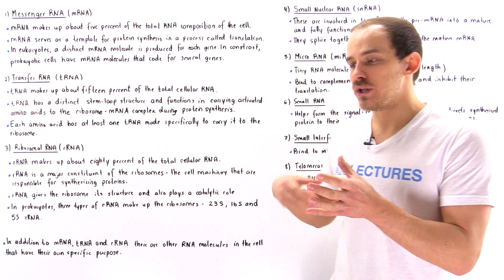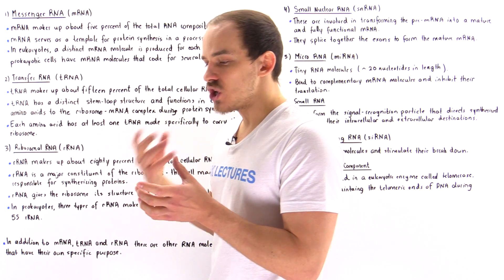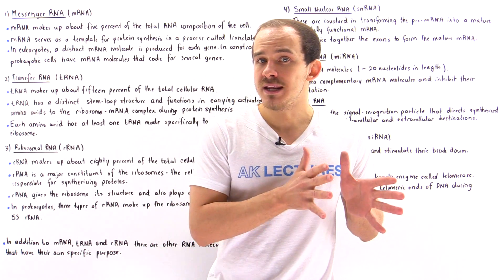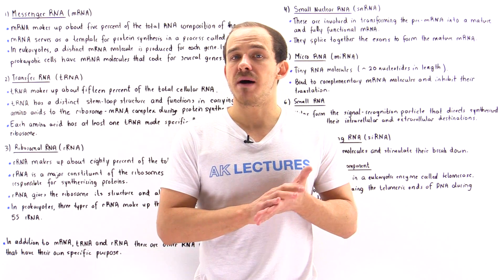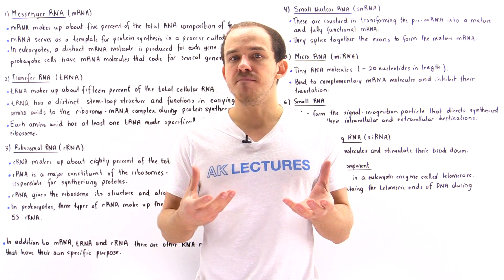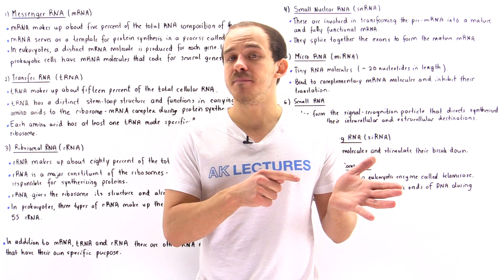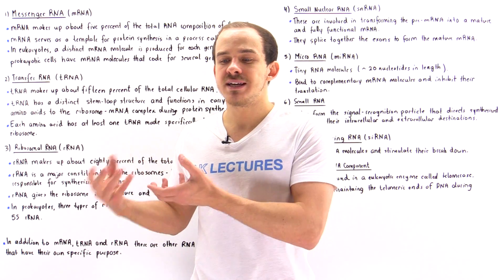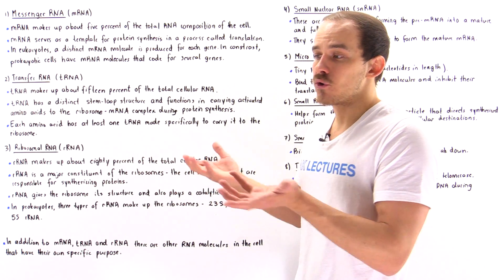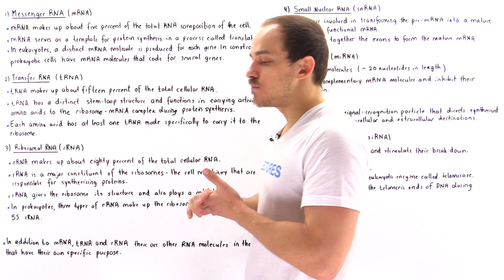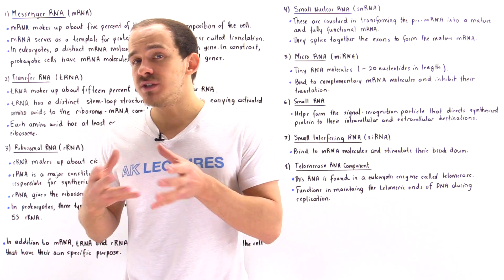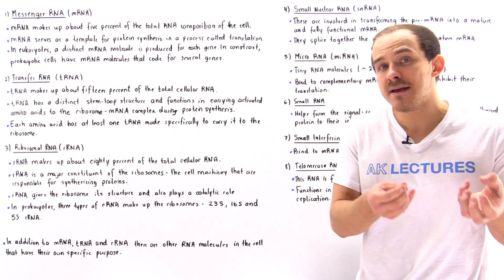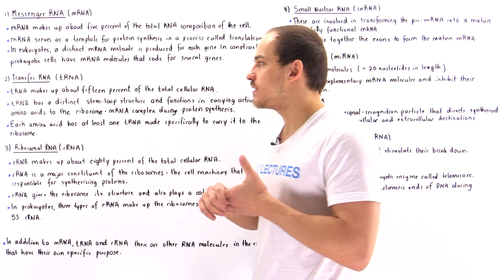So instead of continually using the DNA molecules over and over to produce the proteins, we use these intermediate nucleic acids known as RNA molecules. An RNA molecule is essentially a copy of the segment of the DNA that we want to use to carry out some type of function, for example produce some given protein. By using these intermediate RNA molecules, our cells prevent damage to the DNA molecules.